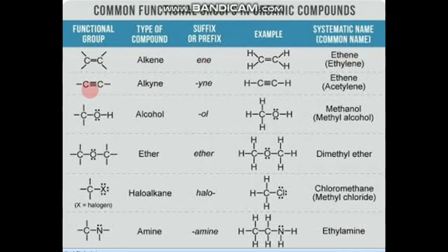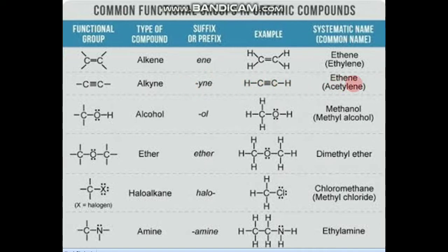Next, if two carbon atoms are triple bonded, this will be an alkyne type of compound. For example, two carbon atoms triple bonded are called ethyne, and the common name is acetylene.